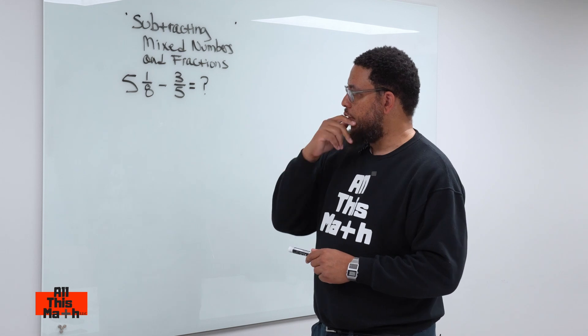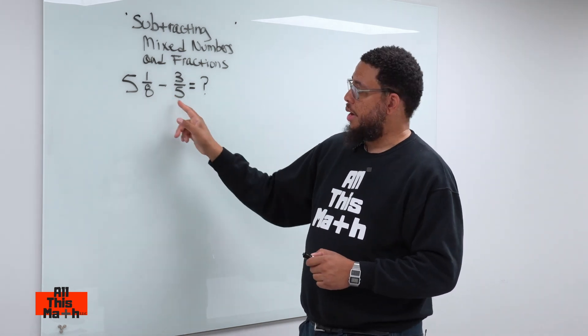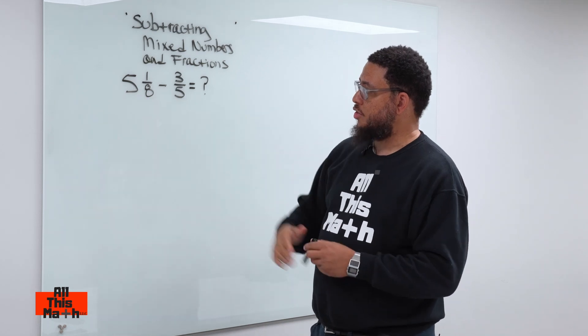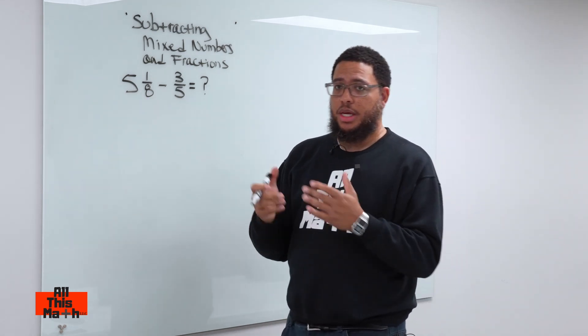Now, there's a couple things we got to do here. First thing is, because we're doing subtraction, just like if we were doing addition, you need common denominators—but that's an eight and that's a five, so they're not common right now. So, let's think about what the common denominator would be between eight and five.